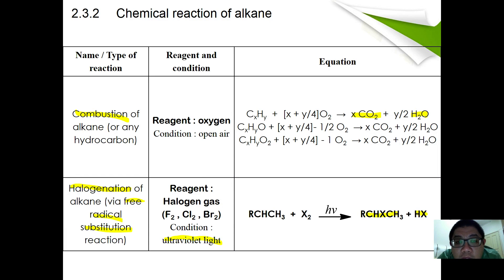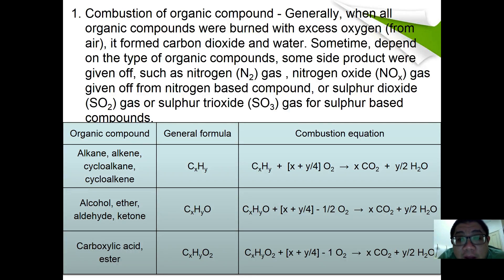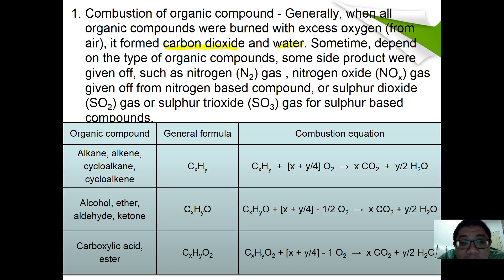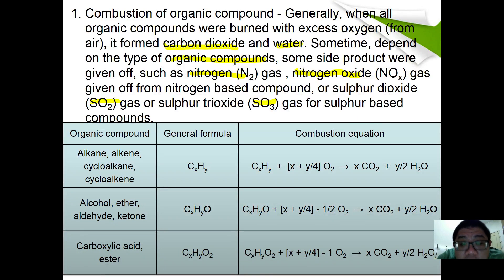Let's look at the combustion of organic compounds. Generally, when all organic compounds burn in excess oxygen, they form carbon dioxide and water. This process is exothermic and releases energy. Sometimes, depending on the type of organic compound, side products are produced such as nitrogen gas, nitrogen oxide, sulfur oxide, or sulfur trioxide for sulfur-based compounds. The general equation is: CxHy + (x + y/4)O2 → xCO2 + (y/2)H2O.